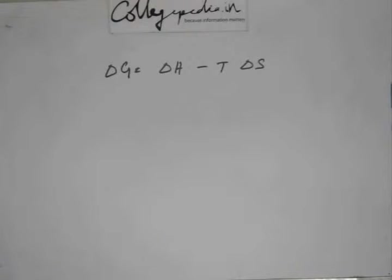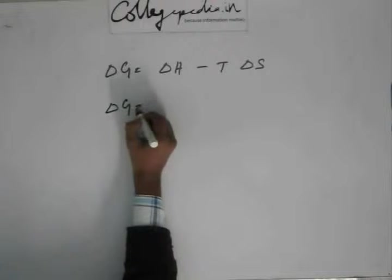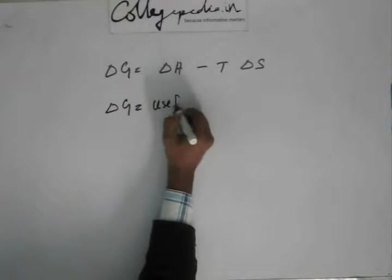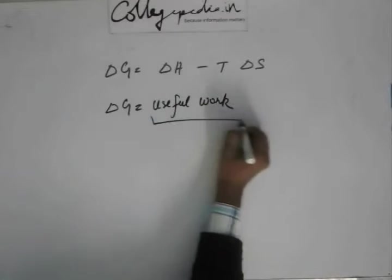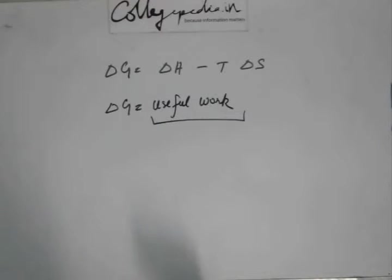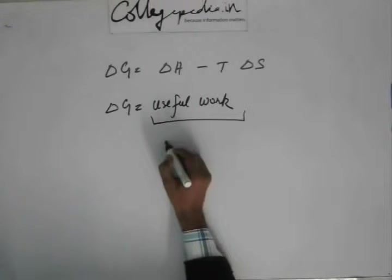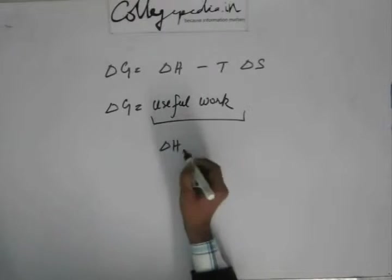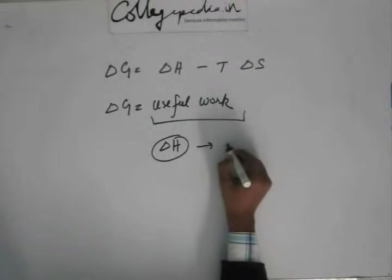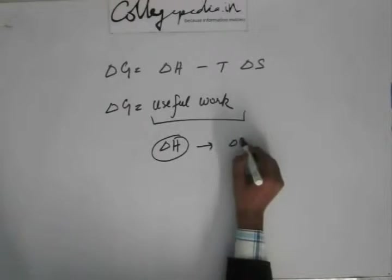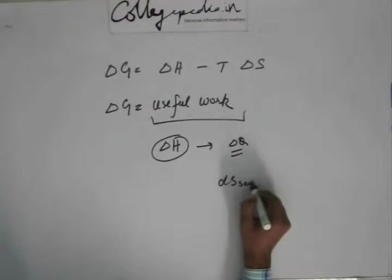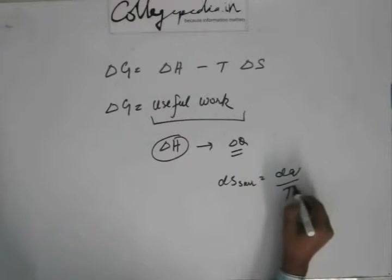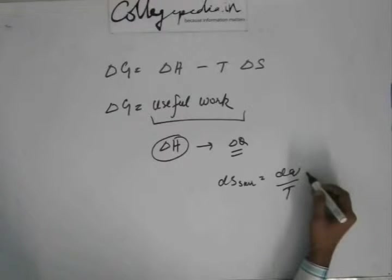Now delta G is giving you the information about the useful work that the system can do. So see, delta H, remember delta H we got as replacing delta Q. In the expression of delta S of surrounding, we had dQ by T surrounding.